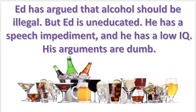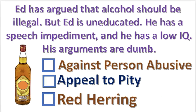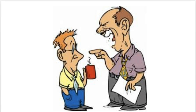Next practice problem. What fallacy is committed in this argument? Press pause. The answer will appear in three, two, one. The argument against the person — abusive. The arguer attempts to discredit Ed's argument by verbally abusing him.